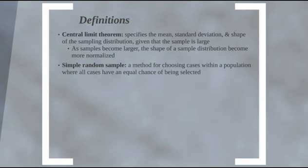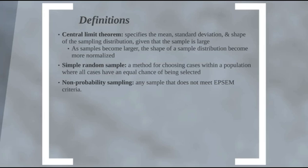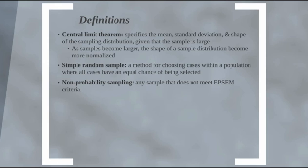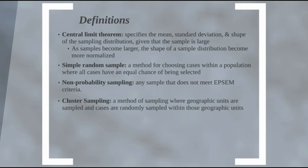A simple random sample is a method for choosing cases within a population where every single case has an equal chance of being selected. A non-probability sample is any sample that does not meet EPSEM criteria, meaning each individual or case doesn't have an equal chance of being selected. Cases are selected not based on probability but based on some other criteria, such as convenience.